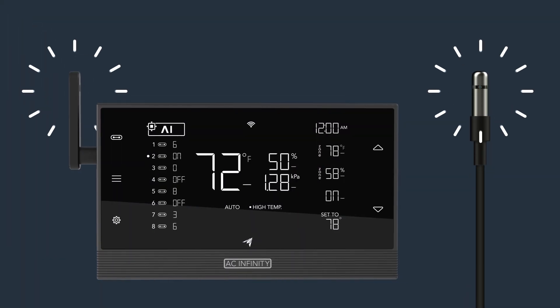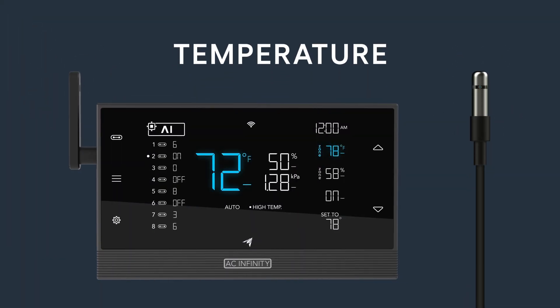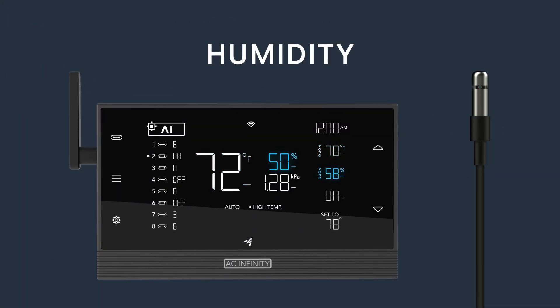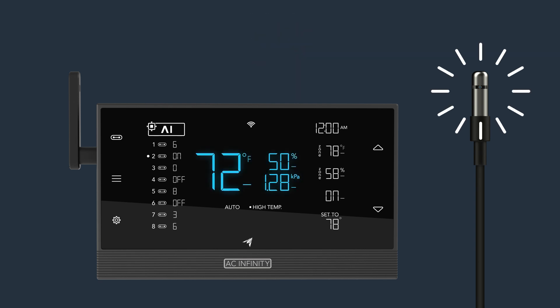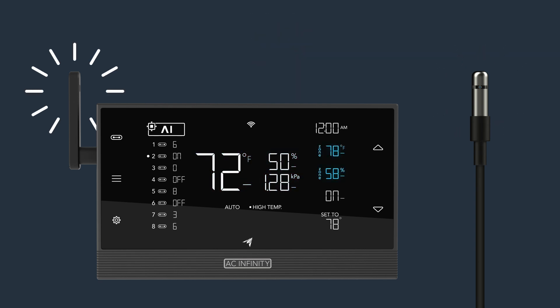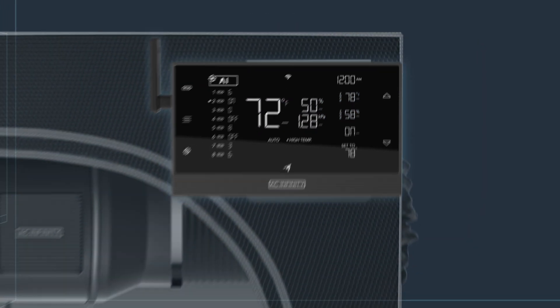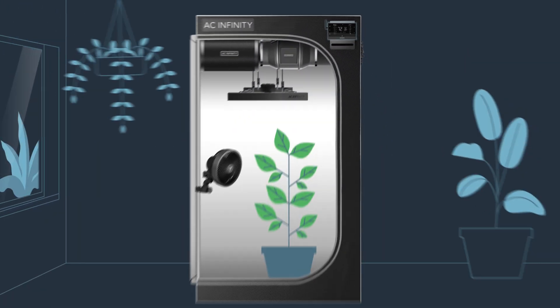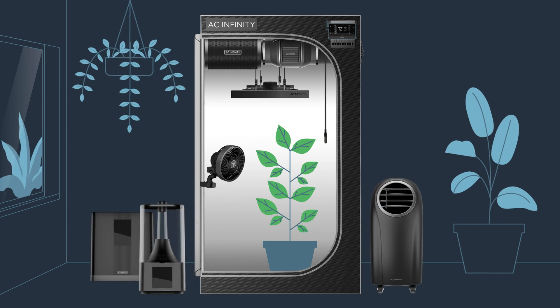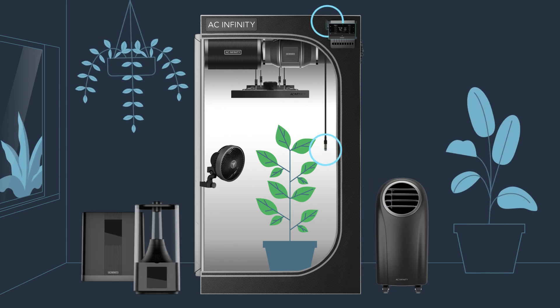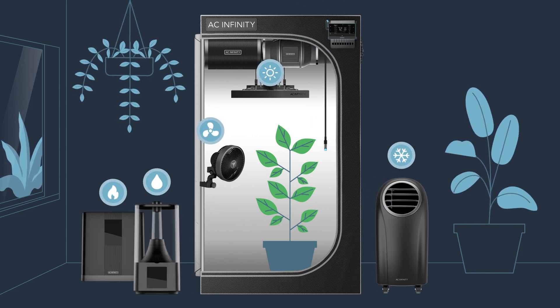Equipped with dual-zone sensors, the controller tracks temperature, humidity, and VPD of your current interior and exterior grow tent climates. The AI actively learns from your sensors about its environment.